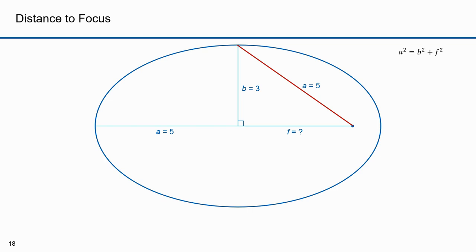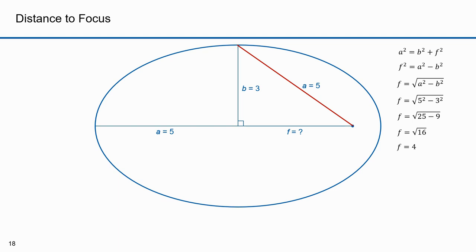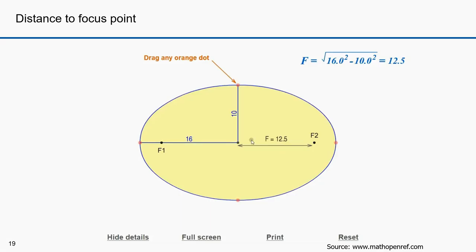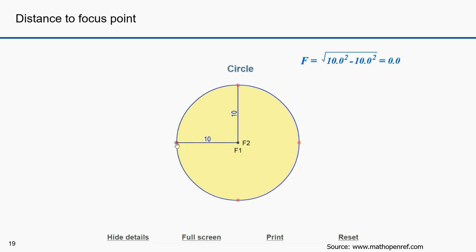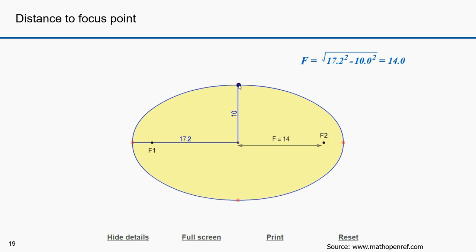What is the length to the focus? The Pythagorean theorem says that since a is the hypotenuse of a right triangle, a² = b² + f². If we want to solve for f: f² = a² − b², so f = √(a² − b²). We only need the positive solution. If we plug in numbers: f = √(5² − 3²) = √(25 − 9) = √16 = 4. The length from the center to the focus is 4 for this ellipse. With this animation you can see how that works out: f = √(a² − b²). If I collapse the focus points into one point, I get a circle where f equals zero.